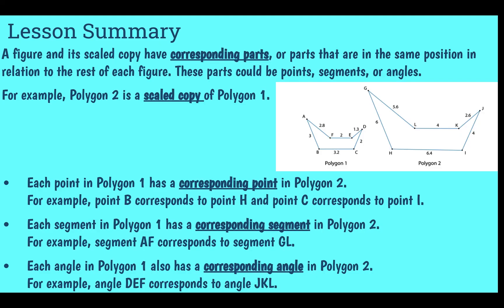In this lesson we learned about corresponding parts. A figure and a scale copy have corresponding parts that are in the same position in relation to the rest of the figure — these can be points, segments, distances, or angles. In the picture here, polygon 2 is the scale copy of polygon 1. They have corresponding points: B corresponds to H, C corresponds to I. They have corresponding segments: segment AF corresponds to segment GL.